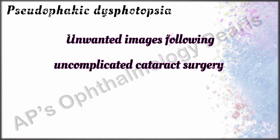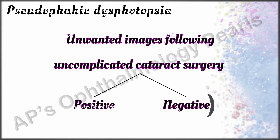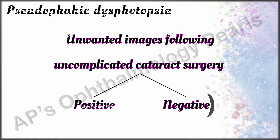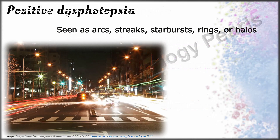Pseudophakic dysphotopsia are unwanted images following uncomplicated cataract surgery. There are two types: positive and negative. The etiology and symptomatology of both are different; however, they can coexist in the same patient.